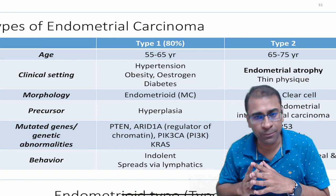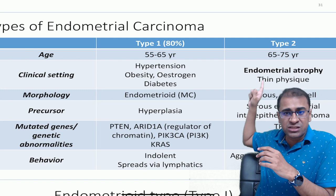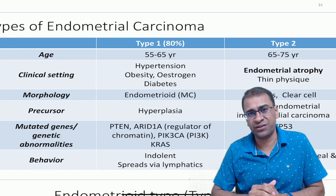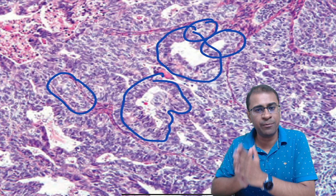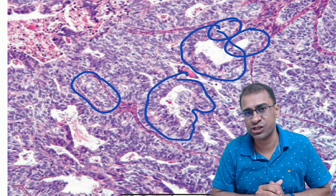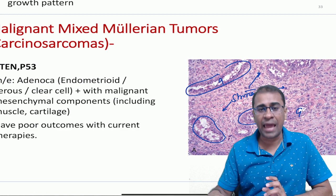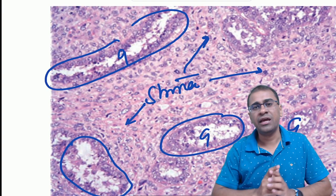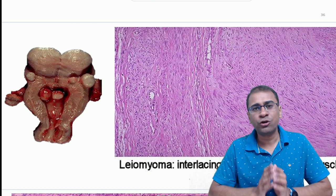Moving on to endometrial carcinoma — it is of two types: type 1 and type 2. Type 1 is the most common and is seen often in hypertension, obesity and diabetes, with a PTEN mutation. Type 2 is important because it is seen in endometrial atrophy, often in thin physique, with a TP53 mutation. Another type is MMMT — mixed malignant Müllerian tumor — also called carcinosarcoma, because it has a carcinoma component in the glands and a sarcomatous stromal component in the form of mesenchymal tissue.